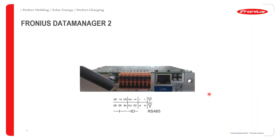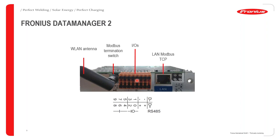Looking more closely at the communication interface of the Fronius Data Manager, its features include the wireless LAN antenna, the Modbus termination switch, input/output ports, the LAN Modbus TCP port with its respective IP switch, and LEDs that show the state of function of the inverter via the Data Manager card.